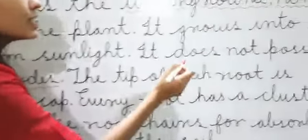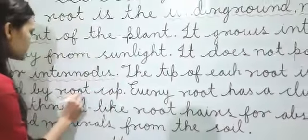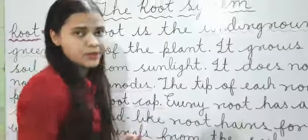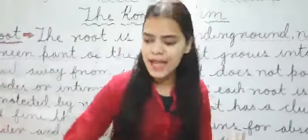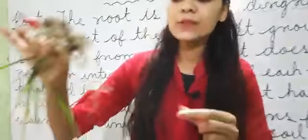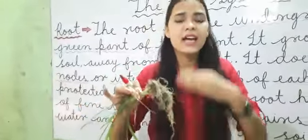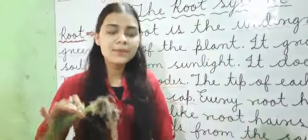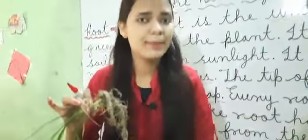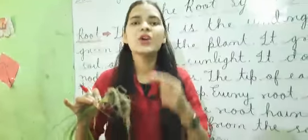The tip of each root is protected by a root cap. Students, jo root hai, root ki jo tip hoti hai — means end part jo hota hai — wo covered hota hai, aap keh sakte hain ek layer se covered hota hai, ya phir jo tip part hota hai, use kehte hain root cap.